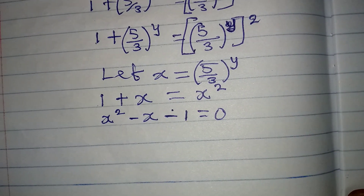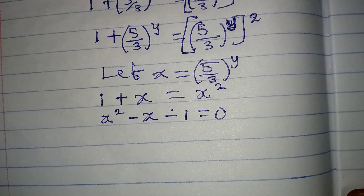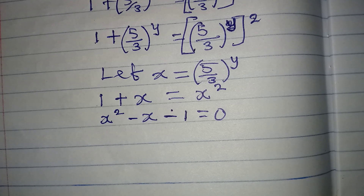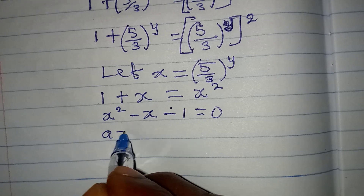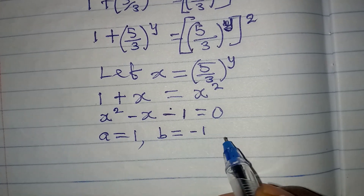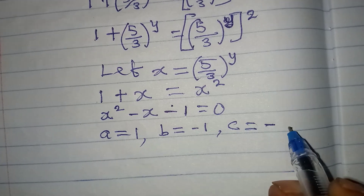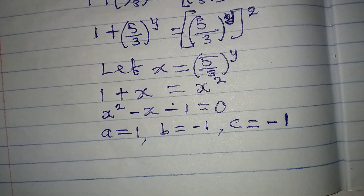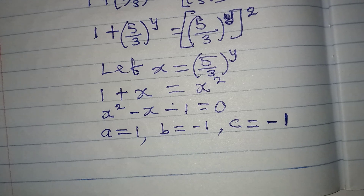We can solve this using the quadratic formula. We identify a equals 1, b equals negative 1, and c equals negative 1, where a is the coefficient of x squared, b is the coefficient of x, and c is the constant term.